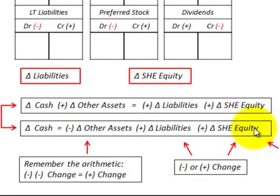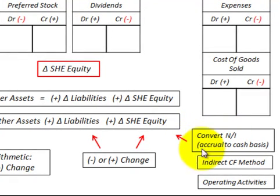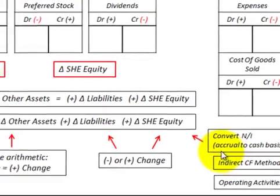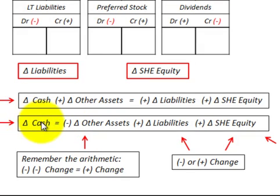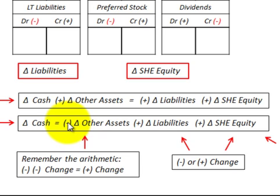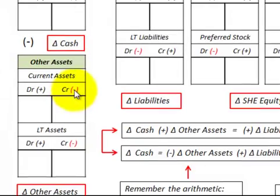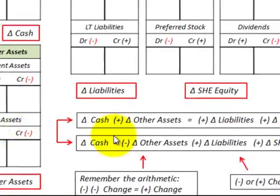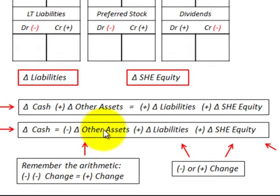This equation is where we convert our net income from the accrual to the cash basis using the indirect cash flow method. I'm really looking at how we can examine the changes in our different asset, liability, and stockholders' equity accounts to know whether to add or subtract them when converting operating activities. I've moved the other assets to the other side of the equation as a minus — so if we invest in plant and equipment and increase our investment, we'd actually subtract that out.